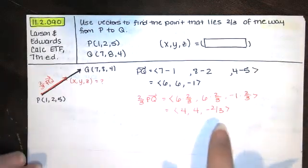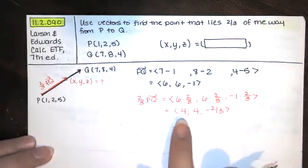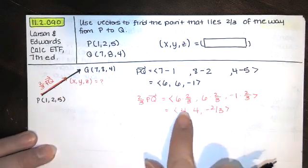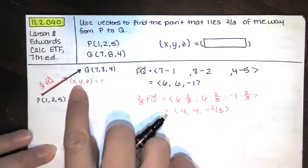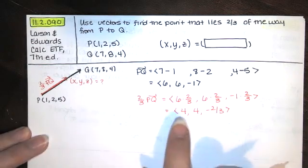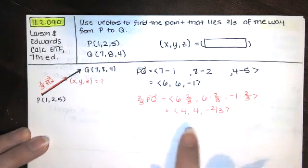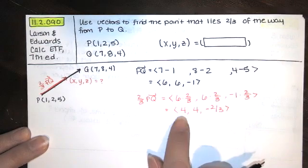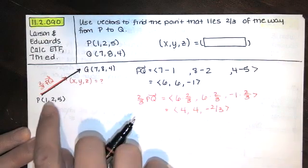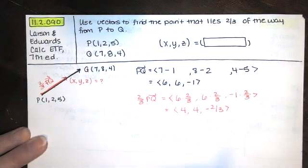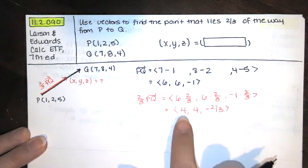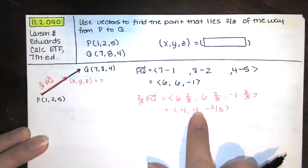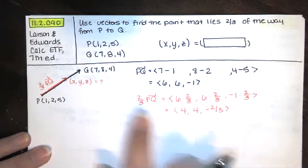Now a lot of students make the mistake of just writing this down, but these are not the coordinates of that point x, y, z. This is a vector in component form. This is saying wherever you start, in order to get from your starting point to the end point of this vector, you need to go four units in the x direction, four units in the y direction, and negative two-thirds of a unit in the z direction.